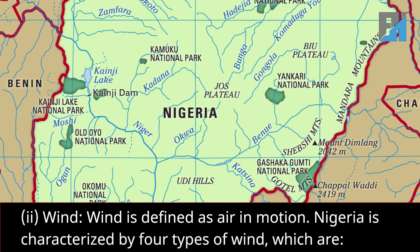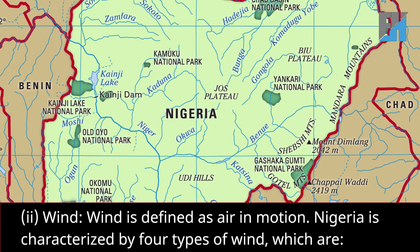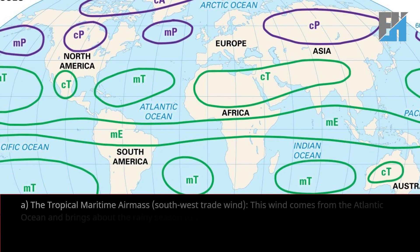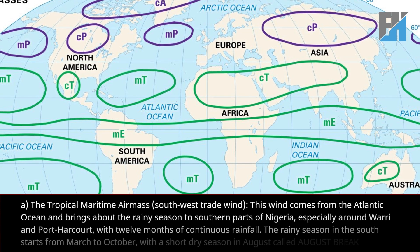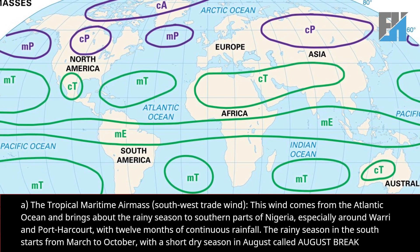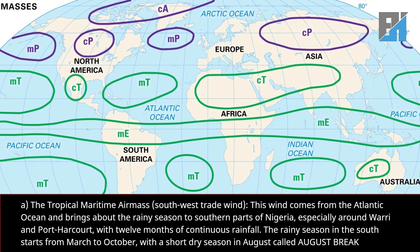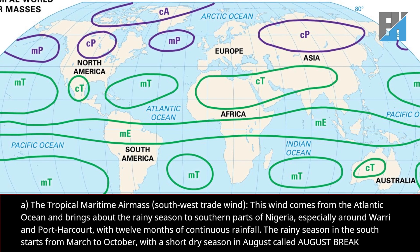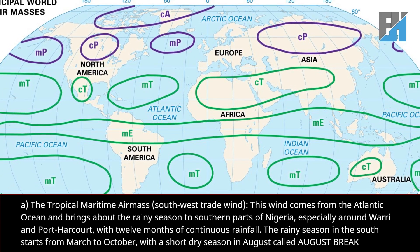Wind is defined as air in motion. Nigeria is characterized by four types of wind. First, the Tropical Maritime air mass — the Southwest trade wind. This wind comes from the Atlantic Ocean and brings about the rainy season to southern parts of Nigeria, especially around Warri and Port Harcourt, with 12 months of continuous rainfall.